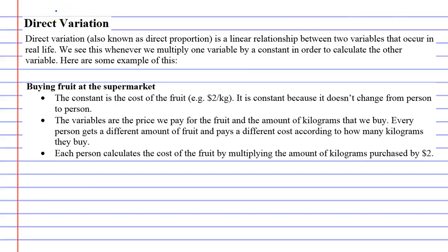Direct variation, which is also known as direct proportion, is a linear relationship between two variables. I'm going to underline this first paragraph that I'm going to read out. It's going to sound quite confusing. I'm going to do my best to explain it.